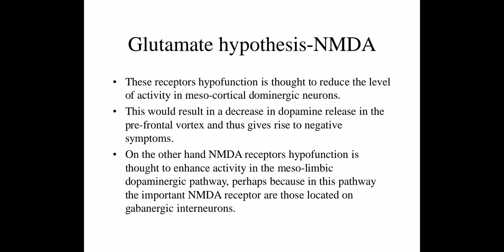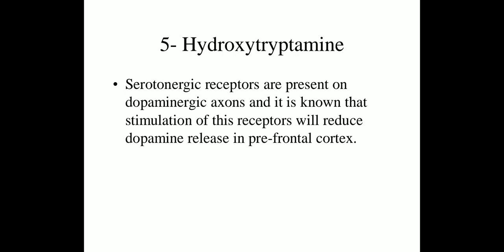The next pathophysiology is the glutamate hypothesis and NMDA receptors. NMDA receptor hypofunction reduces the level of activity in mesocortical dopaminergic neurons, resulting in a decrease in dopamine release in the prefrontal cortex, giving rise to negative symptoms. On the other hand, NMDA receptor hypofunction enhances activity in the mesolimbic dopaminergic pathway, because in this pathway the important NMDA receptors are those located on GABAergic interneurons. Next is 5-hydroxytryptamine — serotonergic receptors are present on dopaminergic axons, and stimulation of this receptor reduces dopamine release in the prefrontal cortex.